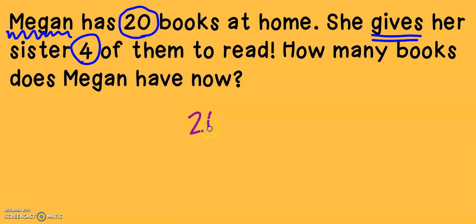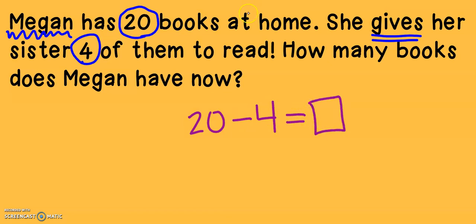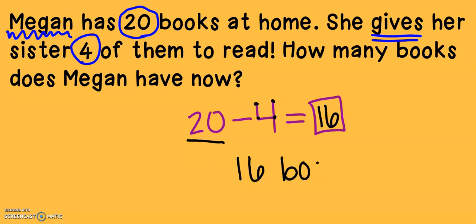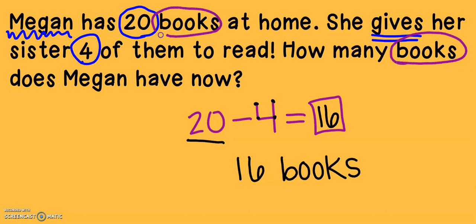Megan started with 20 books, and she gives her sister four of them. How many books does Megan have now? I'm going to use my counting down strategy to solve this problem: 20, 19, 18, 17, 16. Megan has 16 books after she gave her sister some of them. I always remember to look back in my problem to find what my label should be. Since Megan is giving her sister her books, we know that we need to subtract.